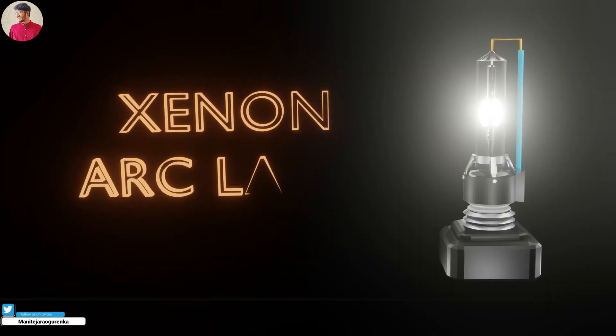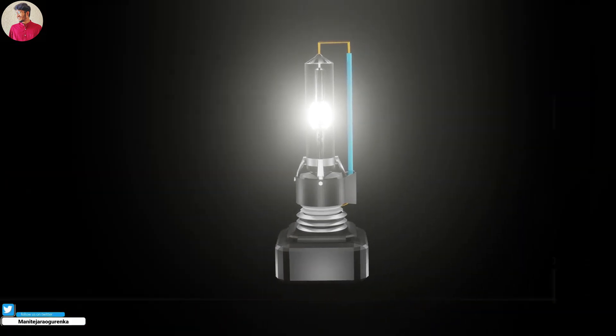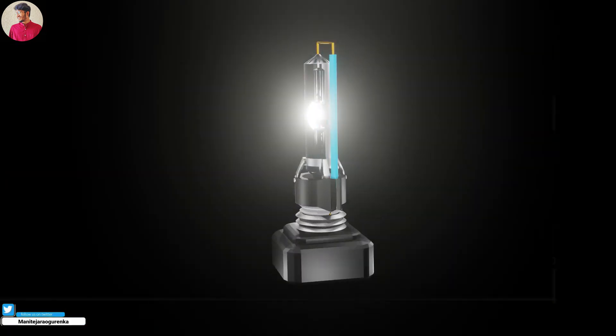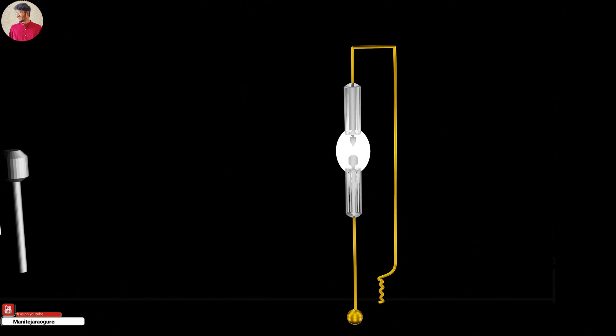Xenon arc lamp construction: The construction of a xenon arc lamp is very simple. Here two thoriated tungsten made electrodes are placed face to face with a small gap in an airtight transparent envelope of fused silica.